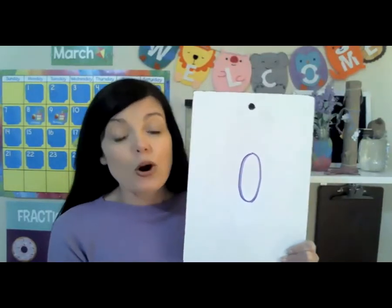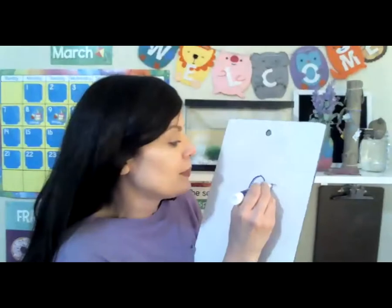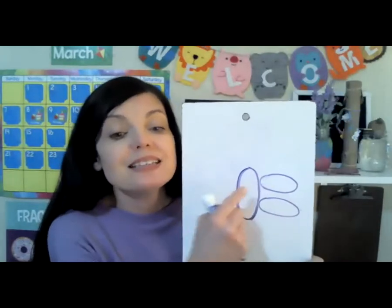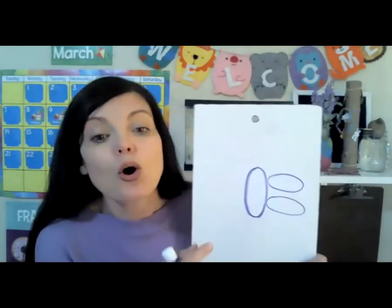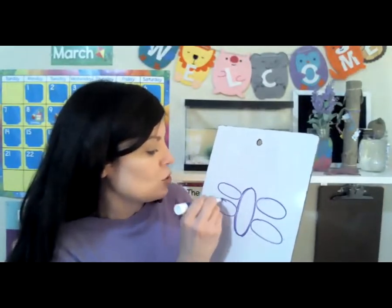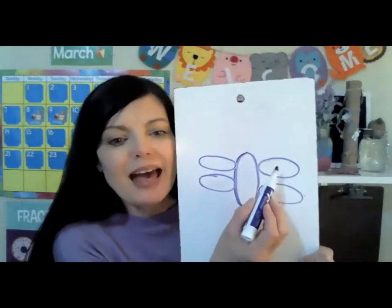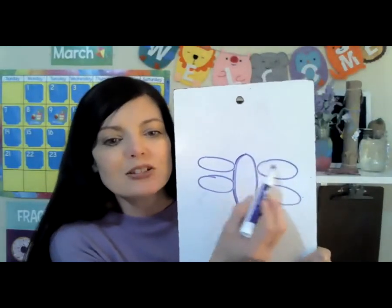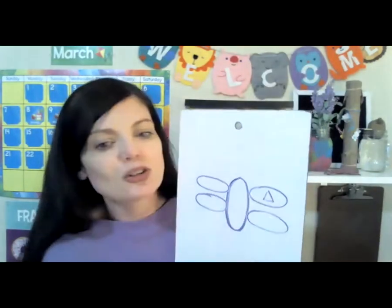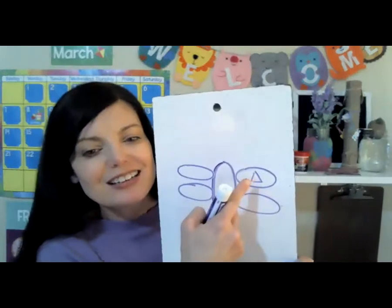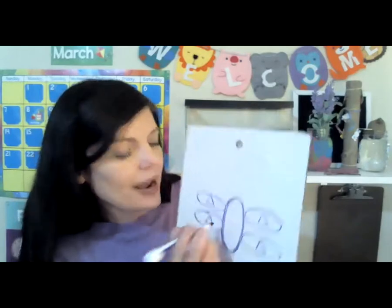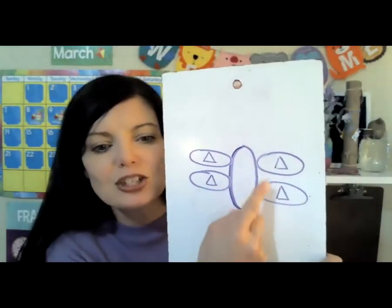Now we're going to make four more ovals, but these ovals are going to be side to side — we call this horizontal. Side to side is horizontal. So let's make two on that side and two more over here, so we have four horizontal ovals. Inside each of these horizontal ovals, we're going to draw triangles. Triangles have three sides. So let's draw triangles in each of these — these are each of the wings.